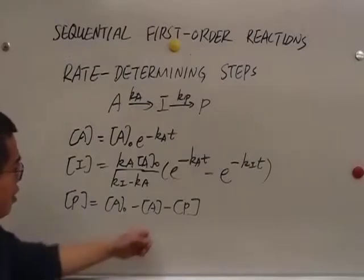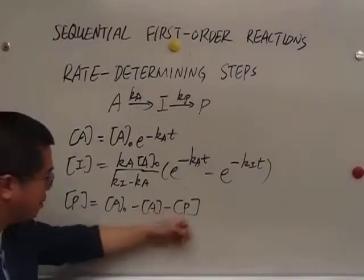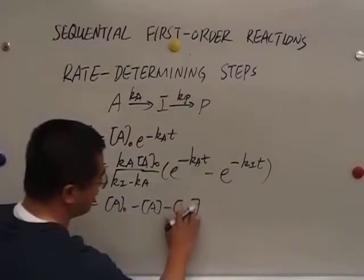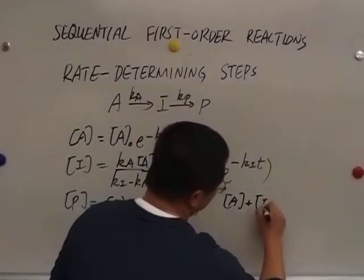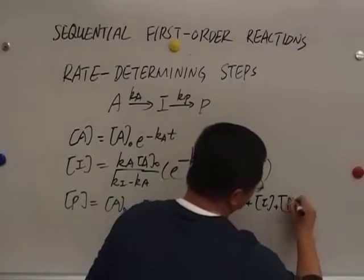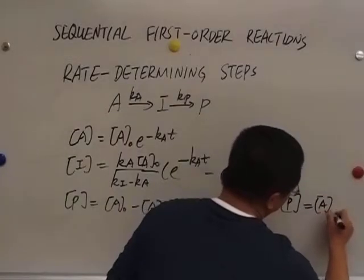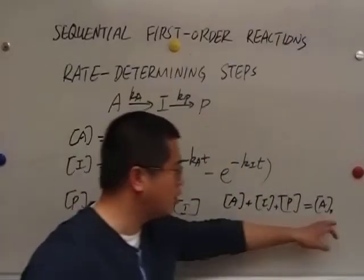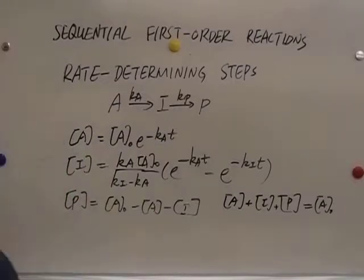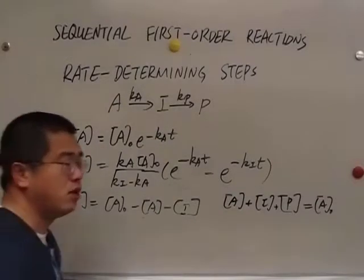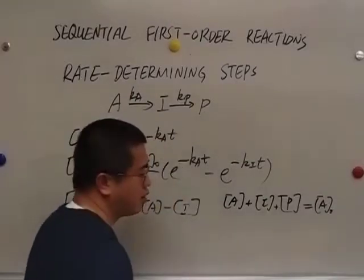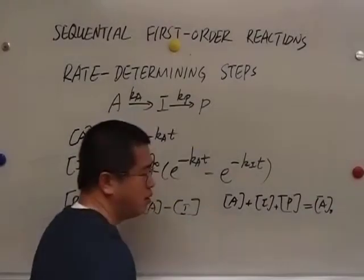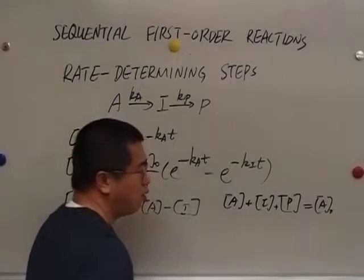In order to find P, the concentration of A plus I plus P is always equal to A naught, because as the reaction proceeds A is either converted to I or P or remain unchanged.